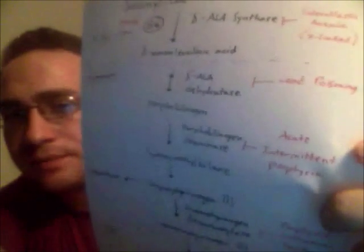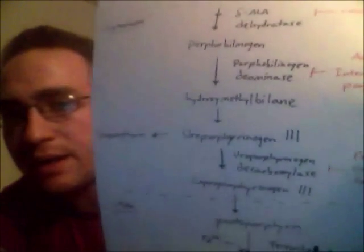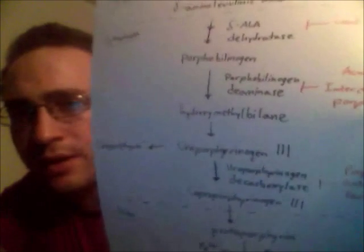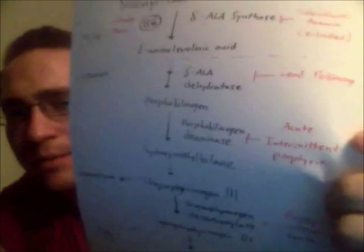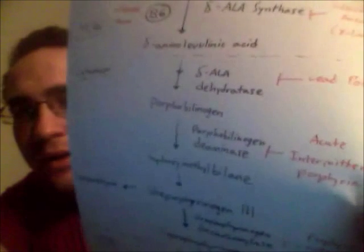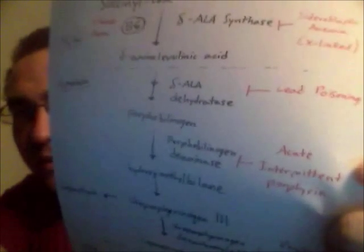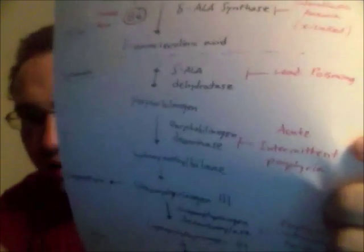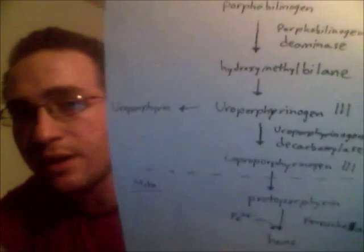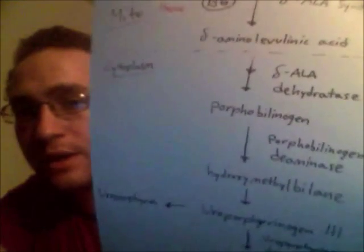And acute intermittent porphyria — if that enzyme is blocked, you're going to build up uroporphyrinogen III, so it's going to shunt to uroporphyrin, and that has some color to it, so you get a tea-colored urine. The buildup is going to be both porphobilinogen and a backup to ALA, and there's uroporphyrin too, but that's not as important because porphobilinogen is a really dark purple.